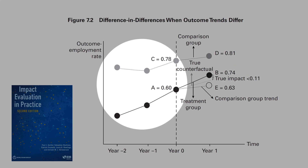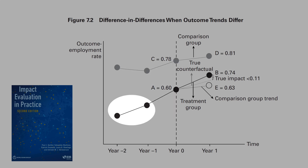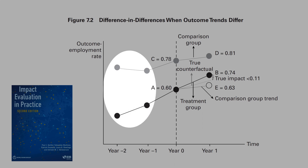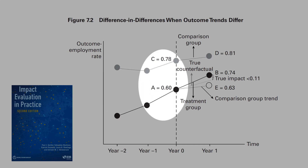Now, see an example of the violation of the common trend assumption. In this interval, there is a positive trend in the treatment group, but in the control group, there is a slightly negative trend. In this case, the control and the treatment group are different, but for this interval, the common trend assumption looks valid — it looks parallel.